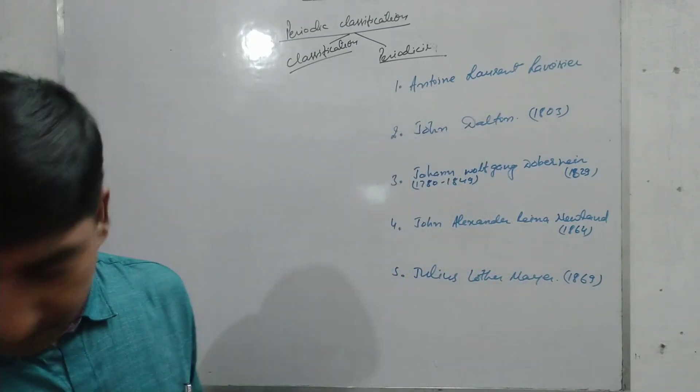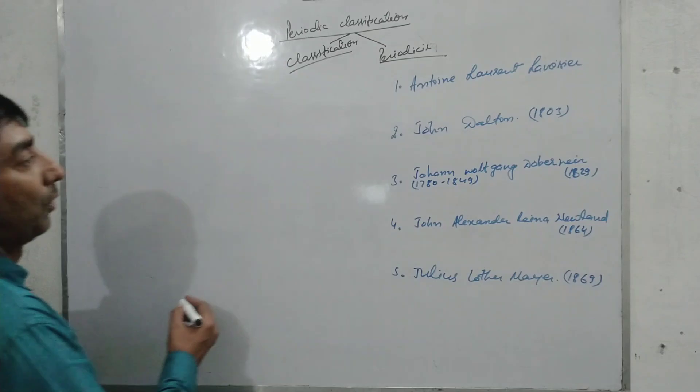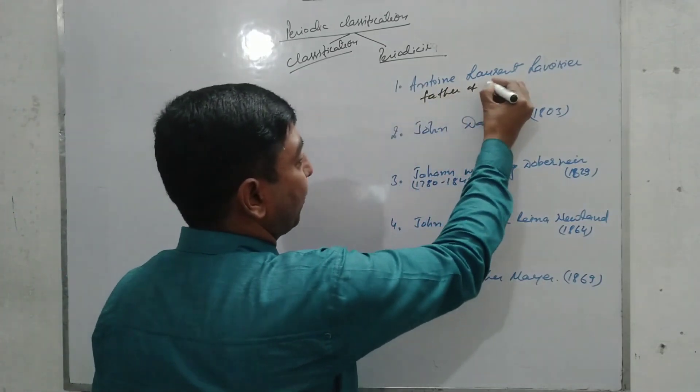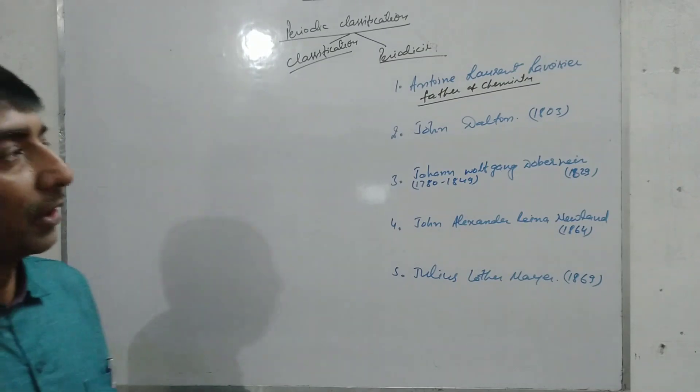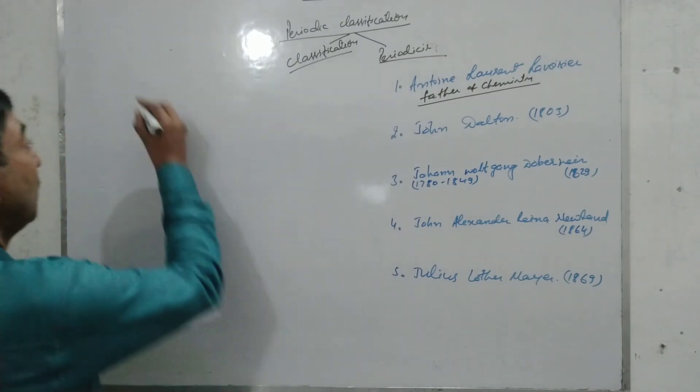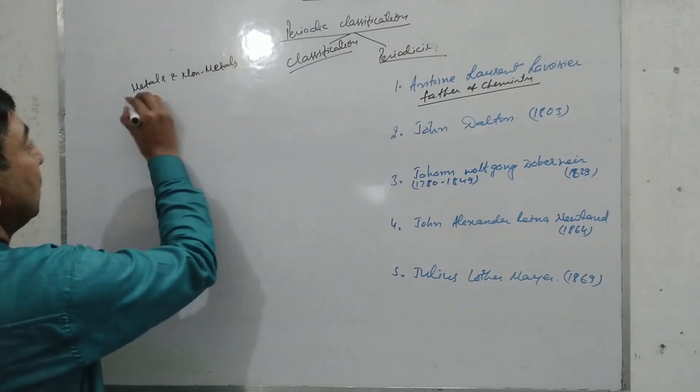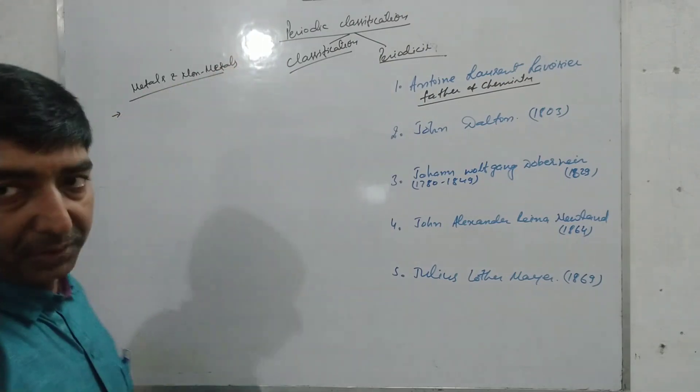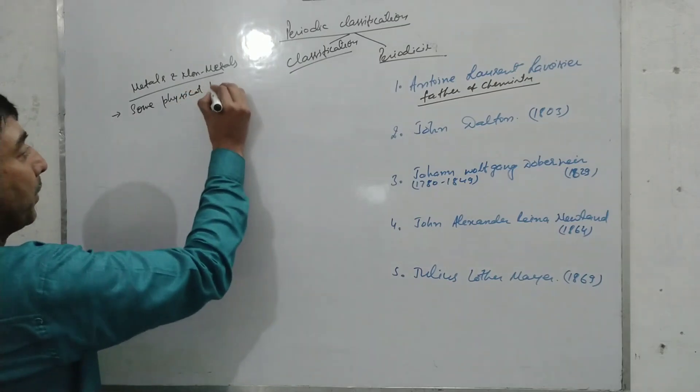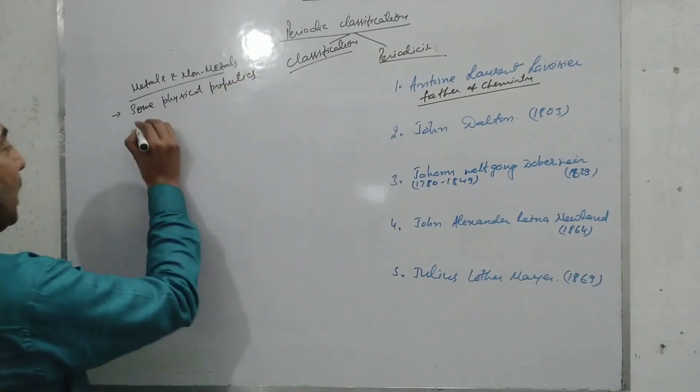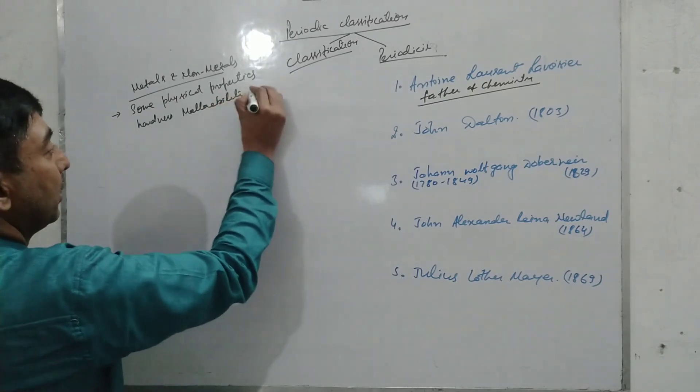The first one is Antoni Laurent Lavoisier, who is also known as the father of chemistry. In the 18th century, this Antoni Lavoisier classified the elements into metals and non-metals. The basis of classification was some physical properties like hardness, malleability, etc.